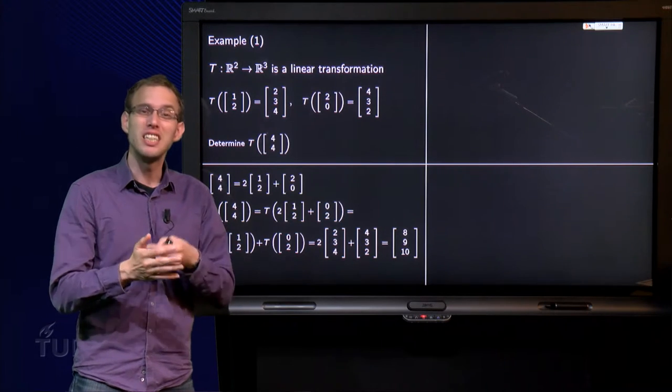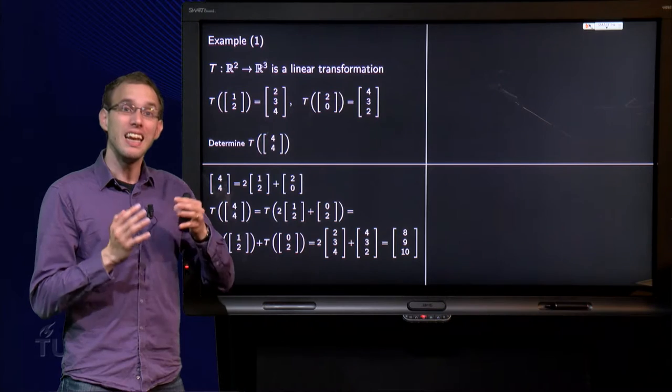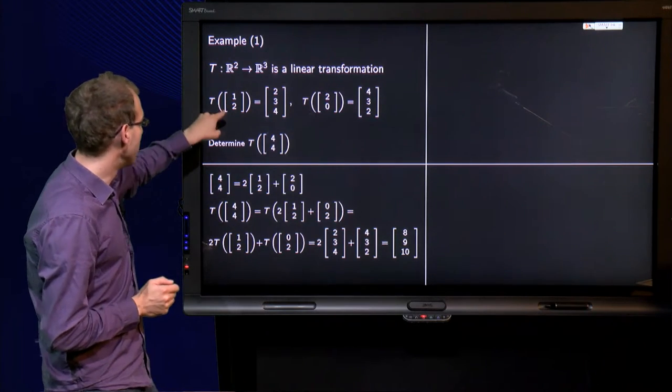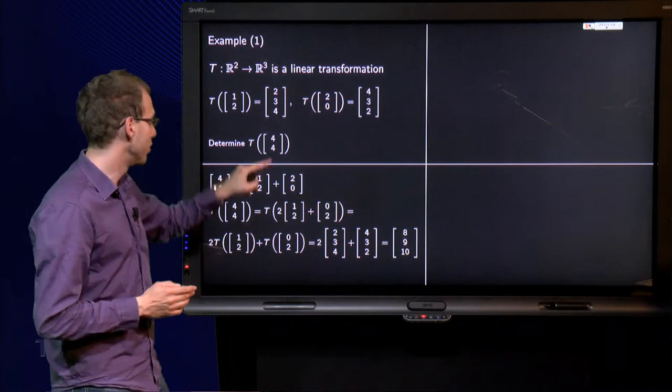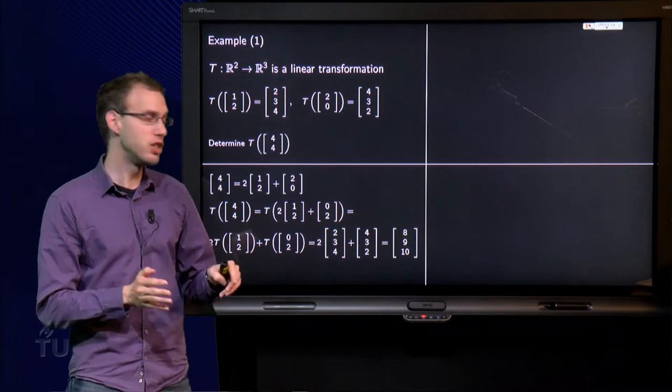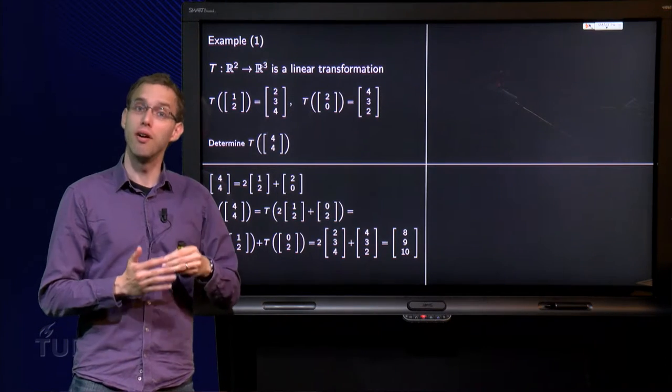So the computation is not so special here. But what is really important to see is that even although we only have information about the image of 2 points, I still can find the image of a point which is completely different due to the linearity property used over here of the transformation T.